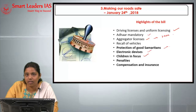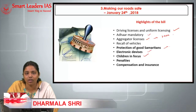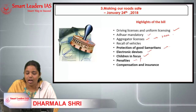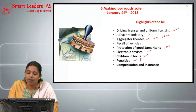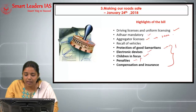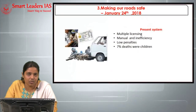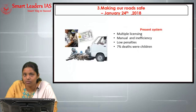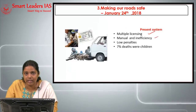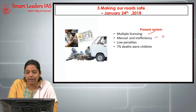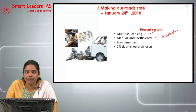The lacunae in the present system include non-uniform licensing with multiple systems, manual and highly inefficient procedures that cannot cater to more than five lakh applications per month, very low penalties, and the fact that 7% of deaths involve children. How the Motor Vehicle Amendment Bill will work: digitization through city surveillance and traffic monitoring using electronic devices, automated traffic enforcement systems to detect traffic light violations and speeding — already tested in Kerala — will be replicated all over India.